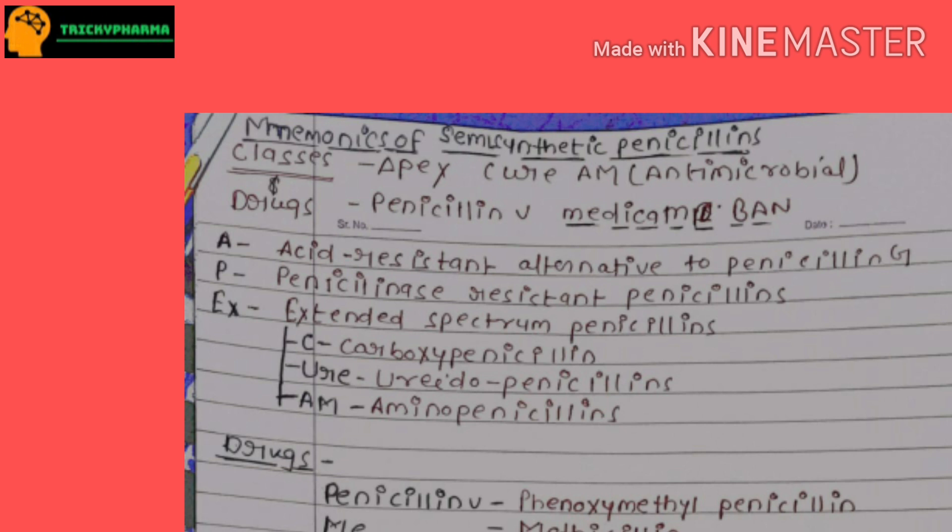The mnemonic of drugs is 'Penicillin V Medicamp Banned' — meaning penicillin V medicamp got banned. Now I'm going to discuss the mnemonics of classes. The first letter of APEX is A, which indicates acid-resistant alternative to penicillin G. P indicates penicillinase-resistant penicillin.